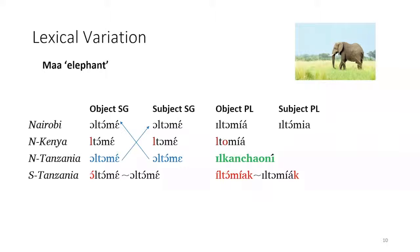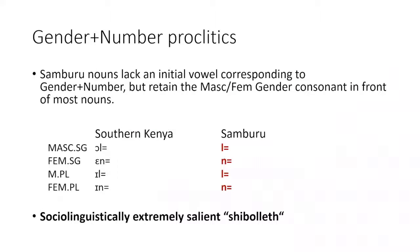You find tone variation and initial vowel dropping in northern Kenya and Tanzania. The initial vowel is part of a proclitic — a little morpheme that marks a combination of gender and number. Samburu nouns lack that initial vowel. In southern Kenya Maa, the masculine singular proclitic is ol, feminine singular en, masculine plural il, feminine plural in — so that vowel is very important in distinguishing number, while the consonant part distinguishes gender. When you drop the initial vowel in Samburu, you're also dropping the number distinction and just keeping the gender.